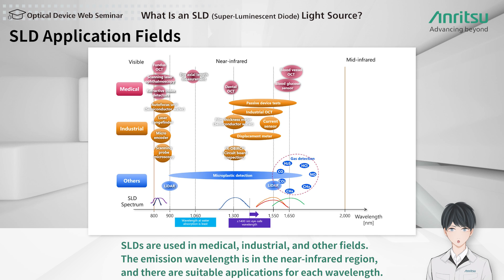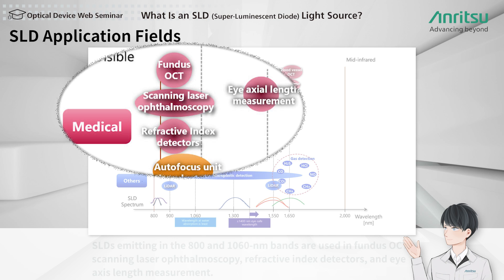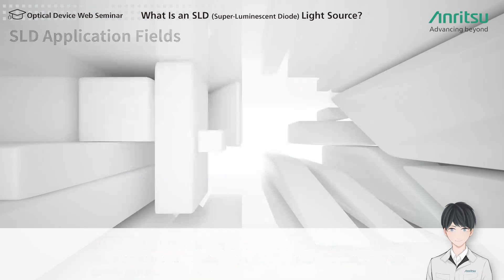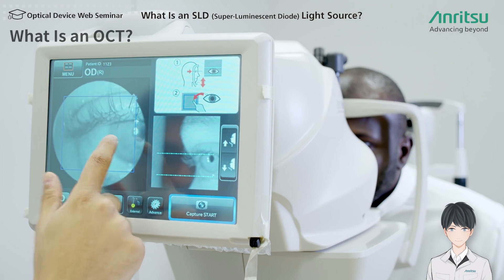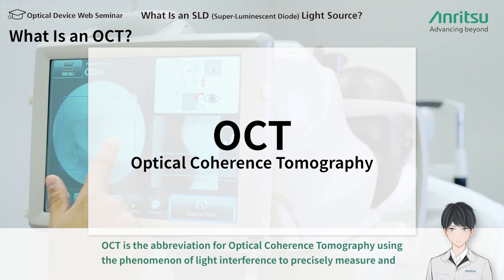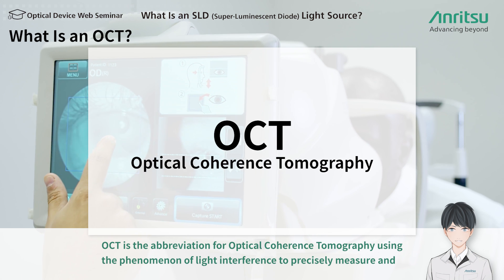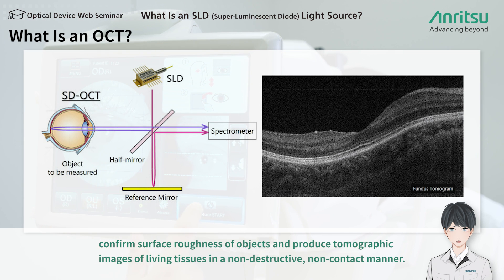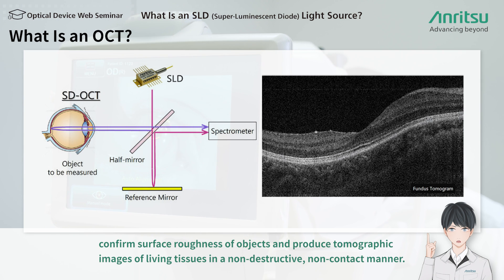SLDs are used in medical, industrial, and other fields. The emission wavelength is in the near-infrared region, with suitable applications for each wavelength. For medical applications, SLDs emitting in the 800 to 1060 nanometer bands are used in fundus OCT, scanning laser ophthalmoscopy, refractive index detectors, and eye axis length measurement. OCT — optical coherence tomography — uses light interference to precisely measure surface roughness and produce tomographic images of living tissues in a non-destructive, non-contact manner.